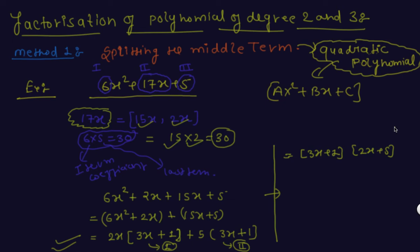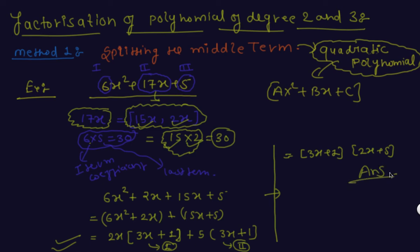To summarize: you choose two numbers which can be added to get the middle term — which in this question is 17x — and by multiplying give a result equal to the multiplication of the first coefficient and the last term. Those factors are your answer.